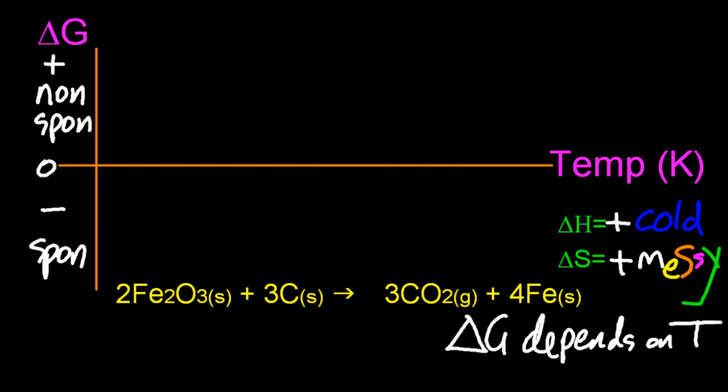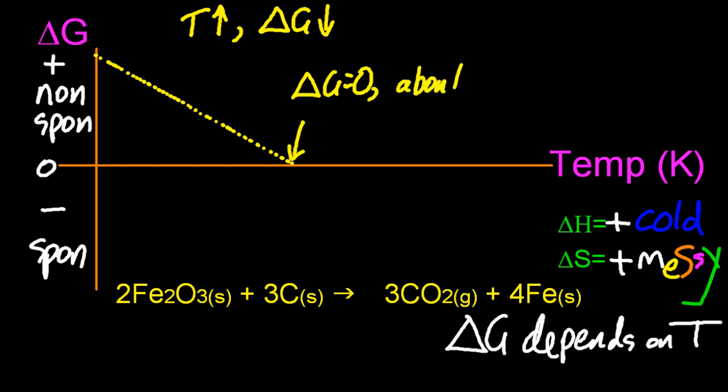So allow me to sketch in the graph as temperature increases the effect on delta G. Well, it should be clear that as temperature goes up, delta G goes down. And at this point here, well, that's important. There, delta G is zero. And it's about to become spontaneous.